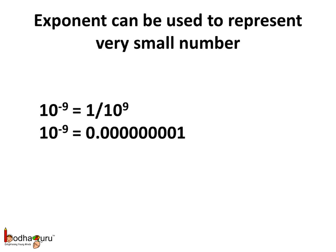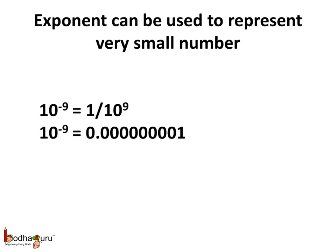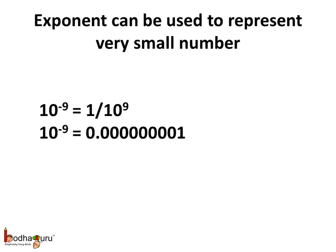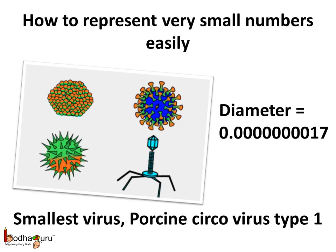The exponents can be used in expressing very, very small numbers too. For example, 10 to the power minus 9 means 1 divided by 10 to the power 9, and that is very, very small. So in this case, the point would move to the left by 9 places and we get a small number: 0.000000001.